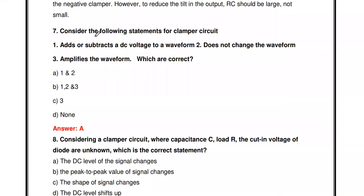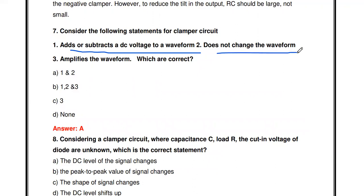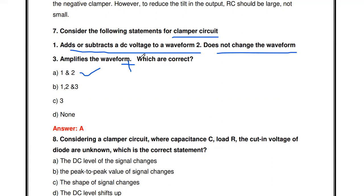Next question: Consider the following statements for a clamper circuit — first, it adds or subtracts a DC voltage to a waveform; second, it does not change the waveform; third, it amplifies the waveform. The same input waveform shape appears at the output. Amplification is wrong — the signal is only shifted in the positive or negative direction. So statements one and two are correct; statement three is wrong.